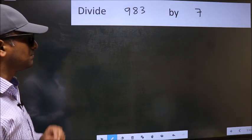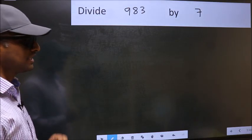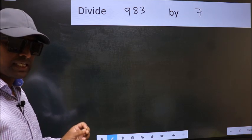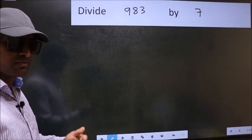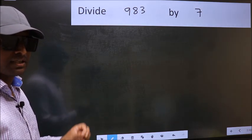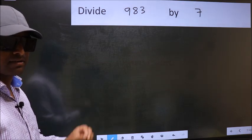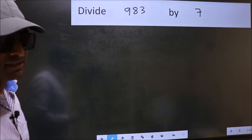Divide 983 by 7. While doing this division, many do this mistake. What is the mistake that they do? I will let you know. But before that, we should frame it in this way.